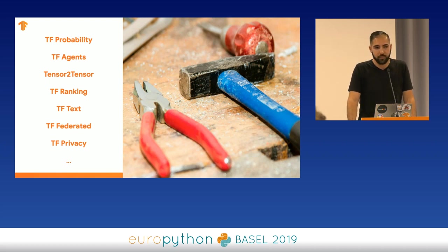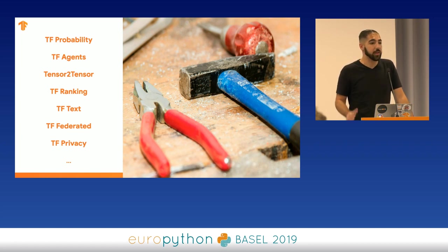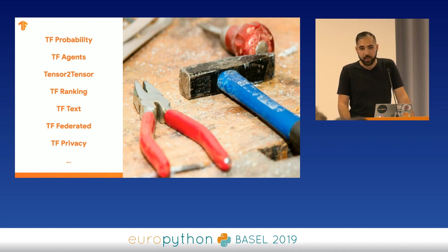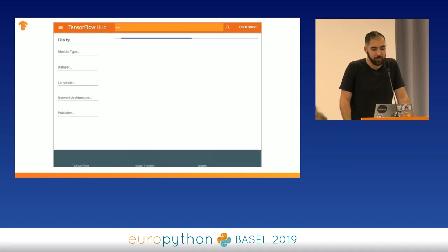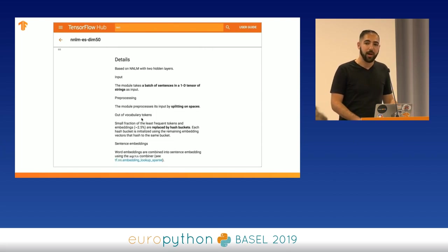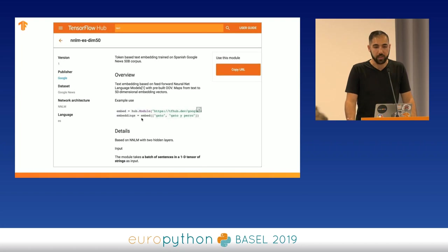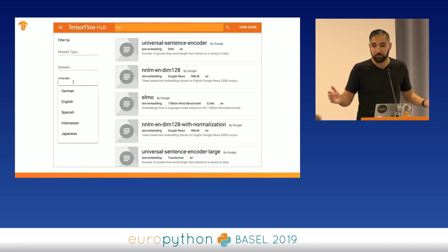Some other packages in the TensorFlow ecosystem target more niche use cases — TF Probability, TF Agents, and Tensor2Tensor, for example. TF Agents is a package for reinforcement learning with higher-level APIs built on top of TensorFlow. TF Text is used for natural language processing. We're also introducing TensorFlow Hub, which you can loosely consider the GitHub of models — you can store and download pre-built models, get started with machine learning using these models, and modify them however you want.